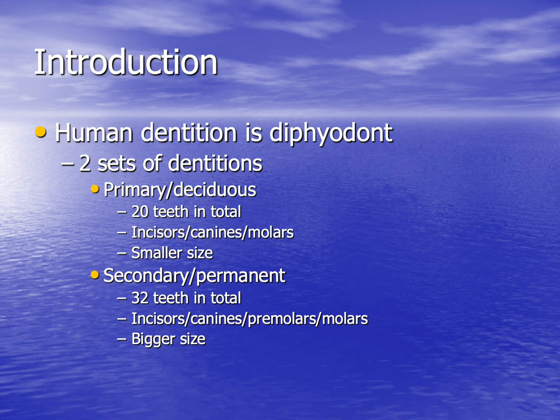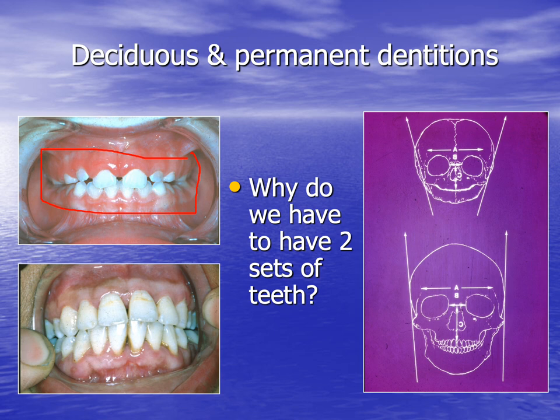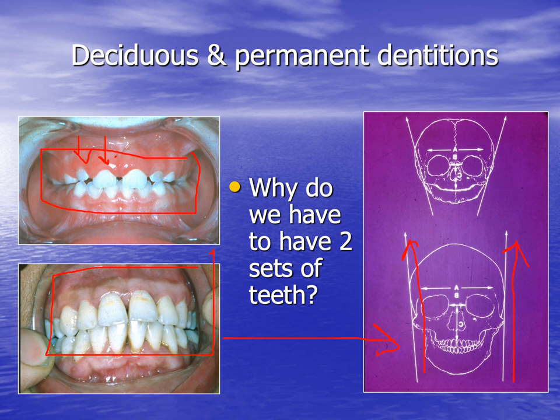In the deciduous dentition we have three classes of teeth: incisors, canines and molars. In the permanent or secondary dentition, in addition to these classes, we have three molars. As you can see, this is primary dentition — they are smaller and have spaces in between them. The permanent incisors are bigger; there are 32 of them, accommodating the bigger size of skull and jaws in the adult and for heavier function of adult jaws.